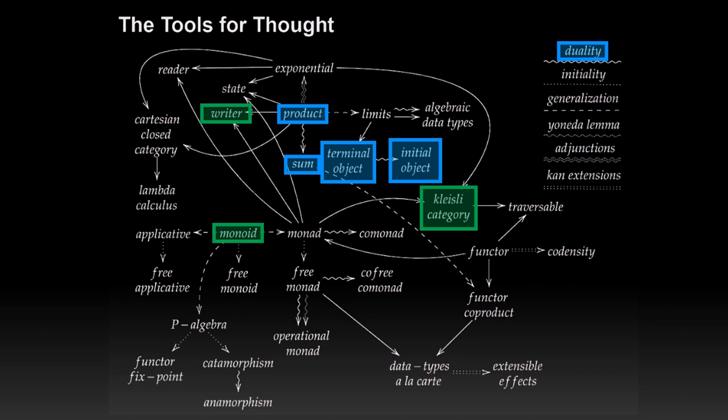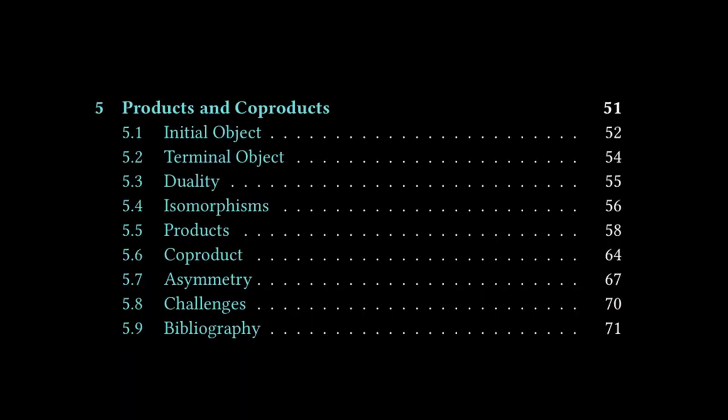With that out of the way, let us take a look at the table of contents. For Chapter 5, Products and Co-Products, we have seven main sections excluding the Challenges and Bibliography section. Those are Initial Object, Terminal Object, Duality, Isomorphisms, Products, Co-Product, and Asymmetry.